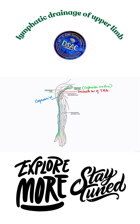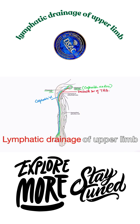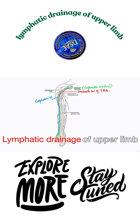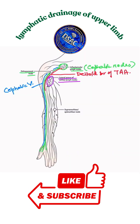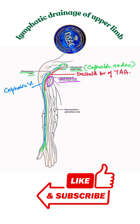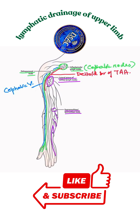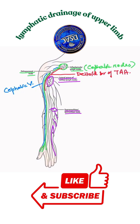Now let's cover the lymphatic drainage of the upper limb. In a single line, the entire lymphatic drainage of the upper limb drains into the lateral group of axillary lymph nodes. However, in MCQs, the option of supratrochlear or epitrochlear lymph nodes may appear — these are an intermediate group of lymph nodes present in the cubitus region, in front of the trochlea.